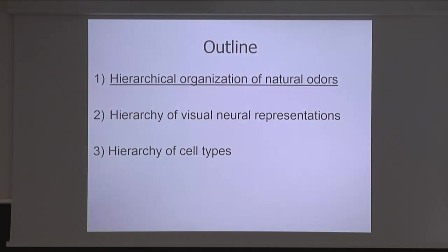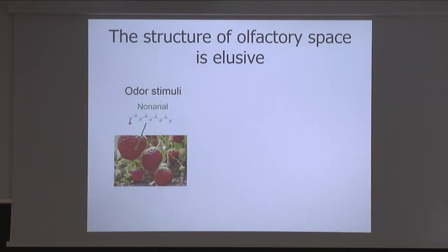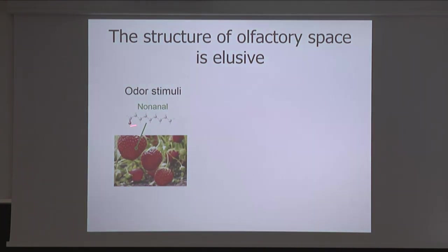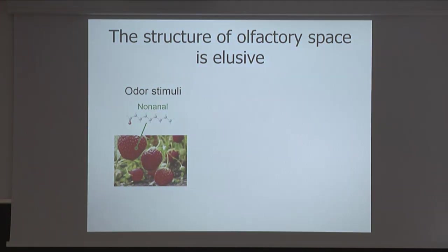Moving on with natural odors: the structure of the olfactory space is very complicated and hard to understand. If we think about a strawberry — for insects, for example — plants are a very important source of natural odors. One of our collaborations is on bees and insects. It turns out that the bee can navigate to a flower, but then it has to make a very important decision whether to land on the flower or not.